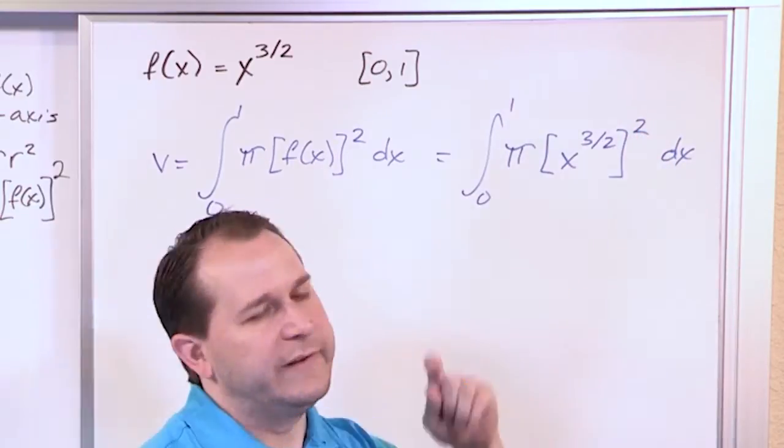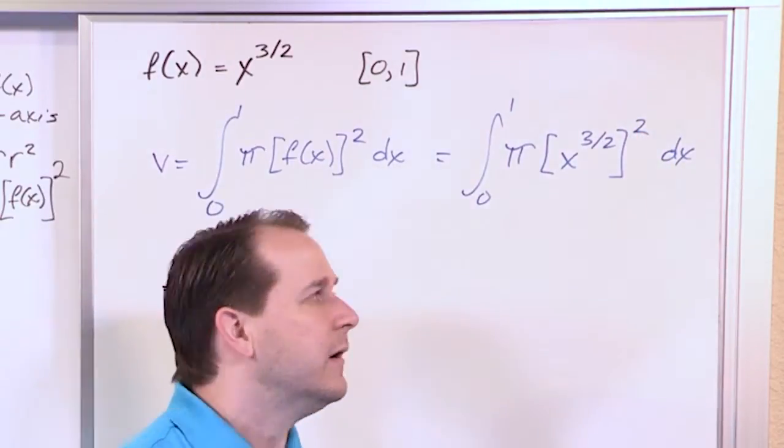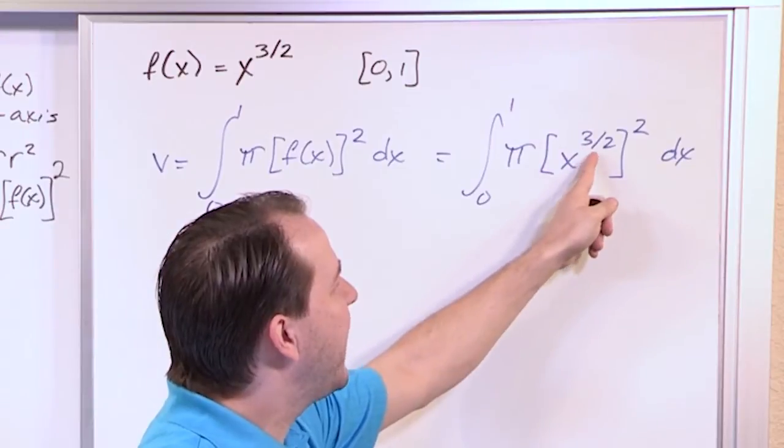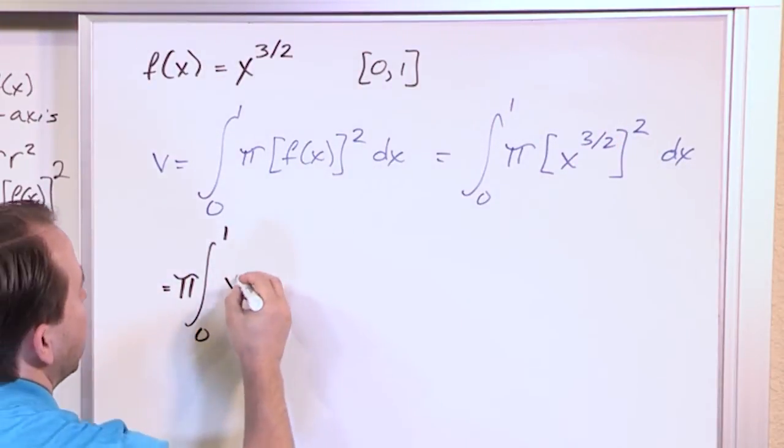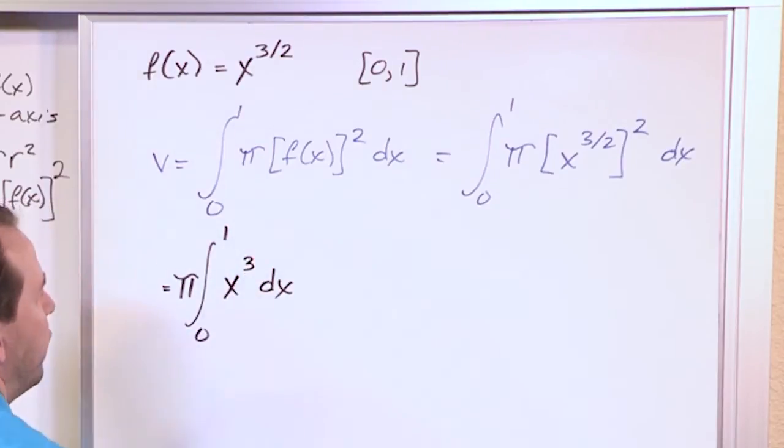Well, basically, I can multiply exponents. Anytime I have a power raised to a power, I can multiply these guys. So three halves times two, the twos are going to cancel. So all you're going to have in here is x cubed dx, once you actually do that power business in there.